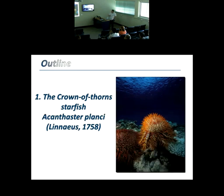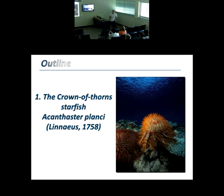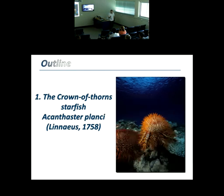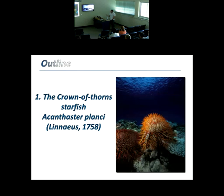The Crown of Thorns starfish was discovered a long time ago, in 1758. But just until the 1960s, there was a huge interest in the damage that these animals are causing to the coral reefs in the Indo-Pacific. These animals feed on corals, but they can feed on everything — prawns, dead fish, whatever.